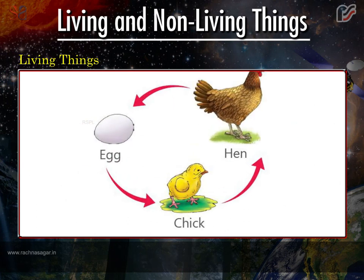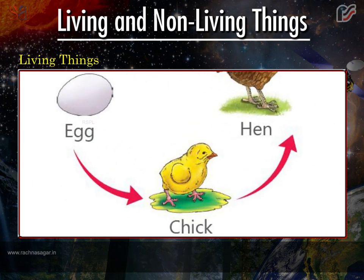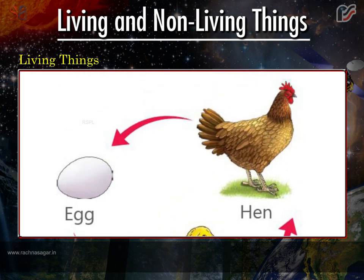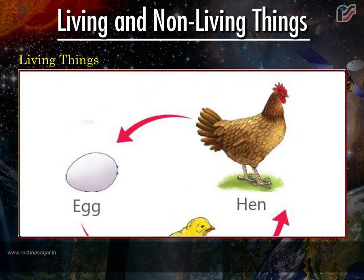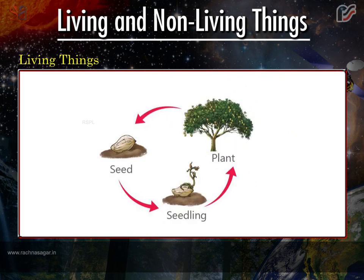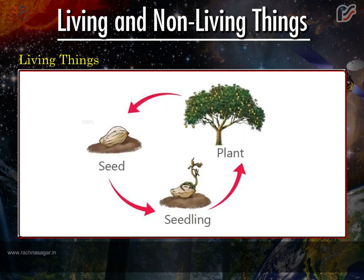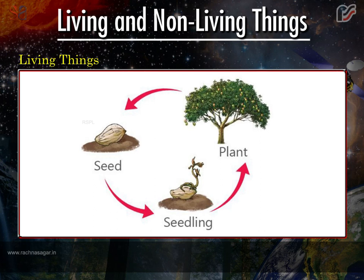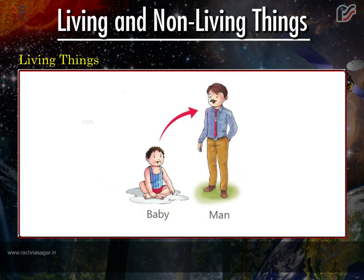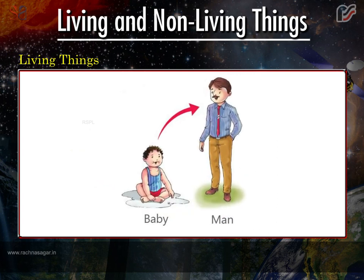An egg changes into a chick, and a chick changes into a hen. A hen lays eggs. A seed changes into a seedling, and a seedling changes into a plant. From a plant, again we get seeds. A baby changes into a man.